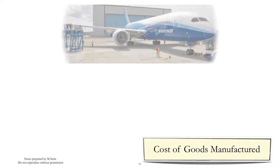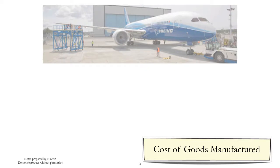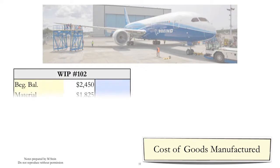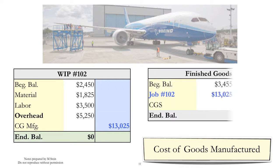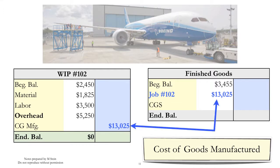When an item is completed, the costs are moved from work in process to finished goods. So, for example, when a 787 is completed, the accumulated work in process costs are credited to the work in process and debited to the finished goods account.